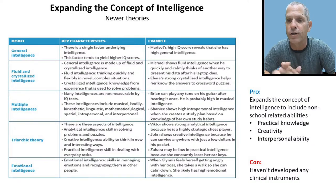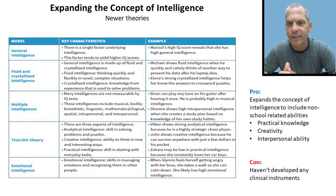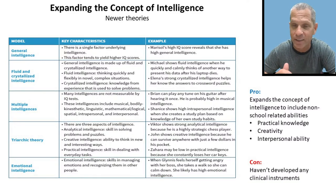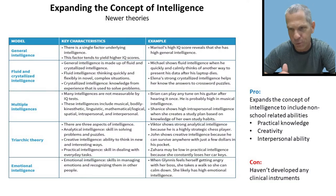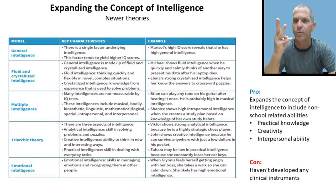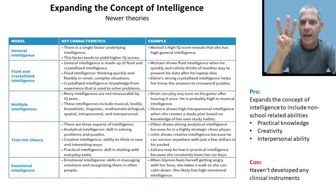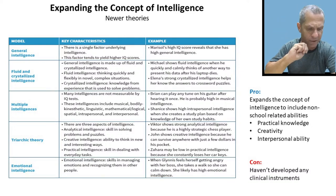Robert Sternberg argued we should include not only analytical or school intelligence, but creative intelligence — the ability to be creative — and practical intelligence, or common sense. If you've ever had a coworker who still hasn't figured it out three years into the job, you know exactly what practical intelligence means. Sternberg's triarchic theory: analytical, creative, and practical intelligence.